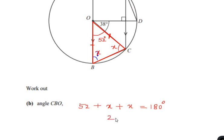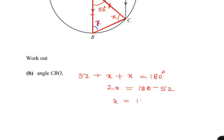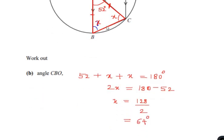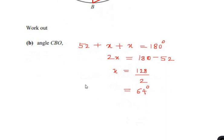Solving further, we get 2x equals 180 minus 52, so x equals 128 degrees over 2, which is 64 degrees. Therefore angle B equals angle C equals 64 degrees. Since we are supposed to find only angle CBO, we write angle CBO equals x, which equals 64 degrees.